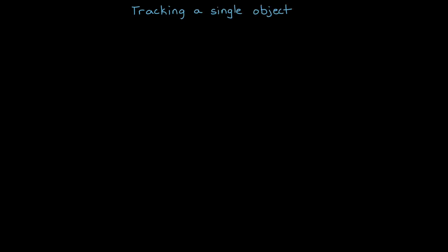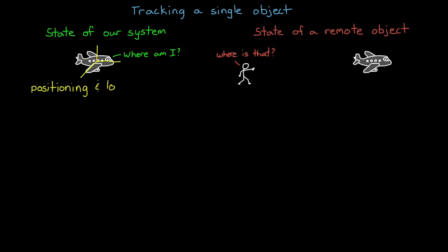In this video, we're going to switch our focus from trying to estimate the state of our own system to estimating the state of a remote object. So we're switching from the idea of positioning and localization to single object tracking.